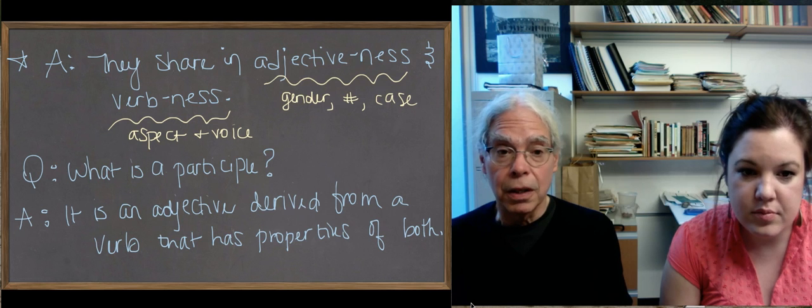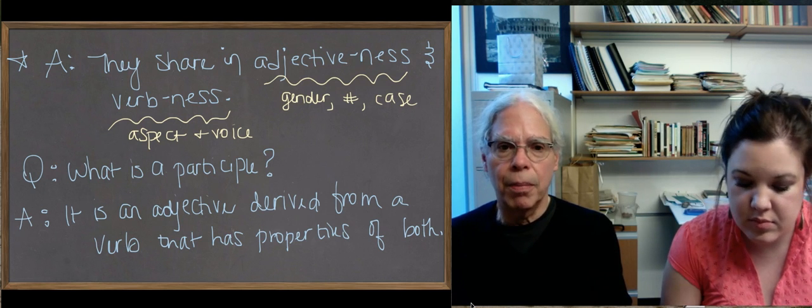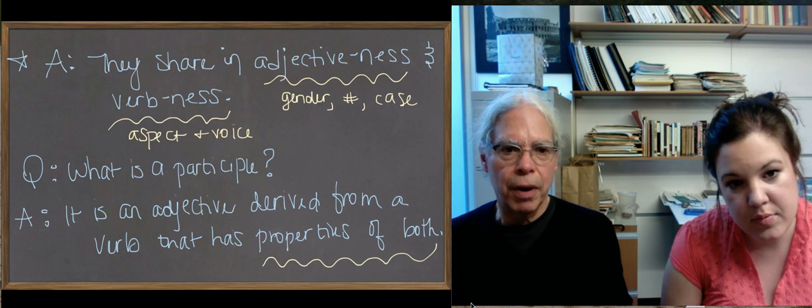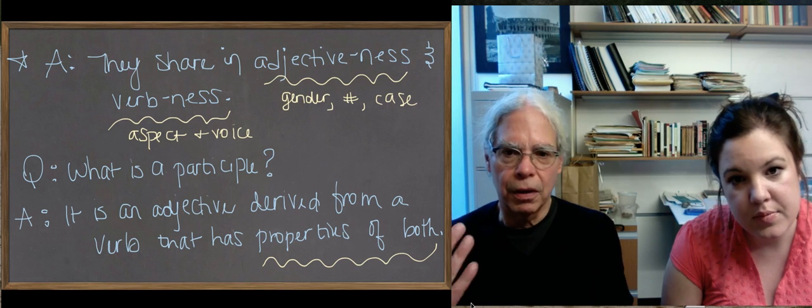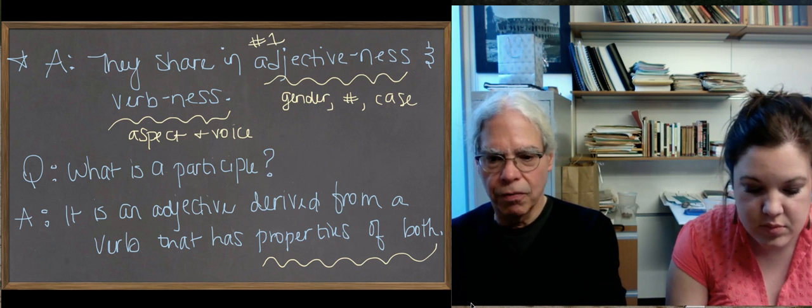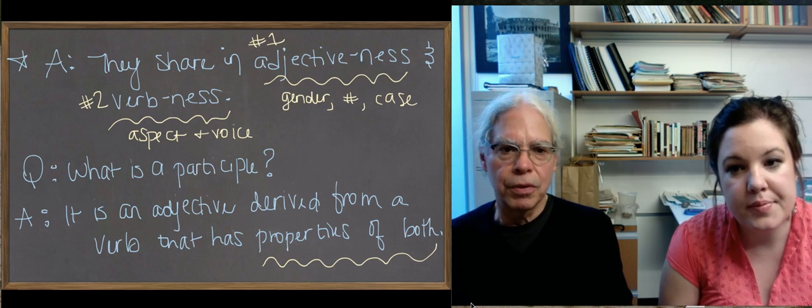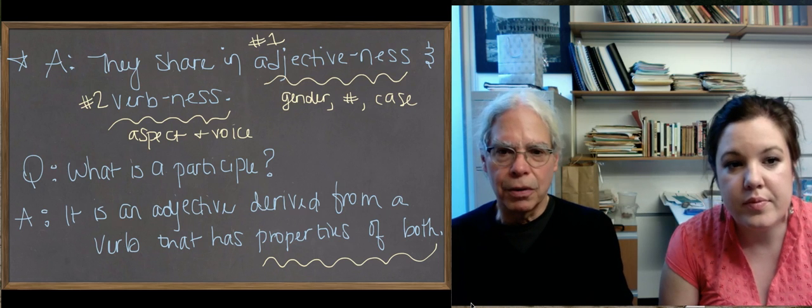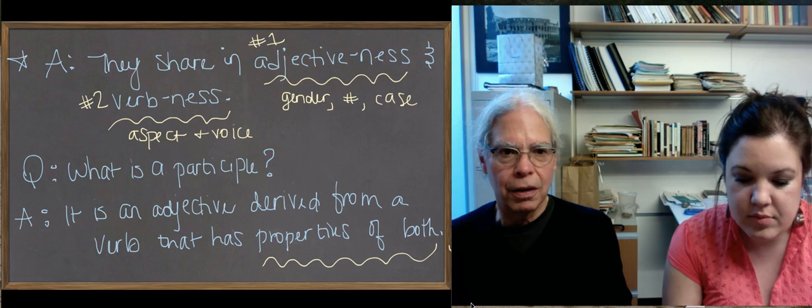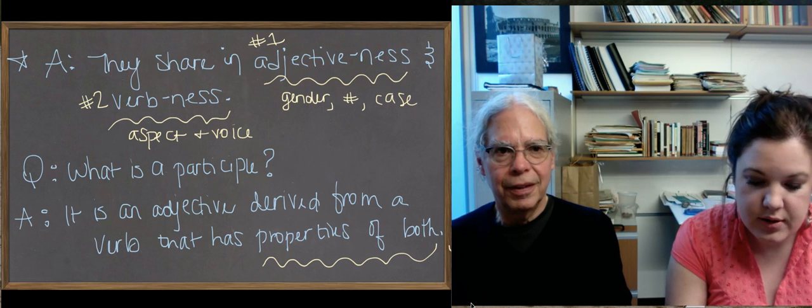So there is the definition of a participle. It's fundamentally an adjective, derived from a verb, that has the properties of both. But it's important to think of the adjectiveness as the primary aspect, as the thing, if you're thinking of shading or backgrounding, that the adjectiveness is in front and the verbness is a little bit beneath the surface. But we can give you an example, and you'll see that this is the thing that adjectives do in English as much as they do in Greek.